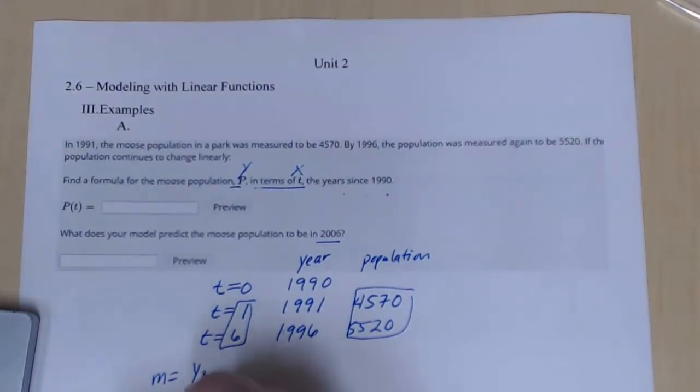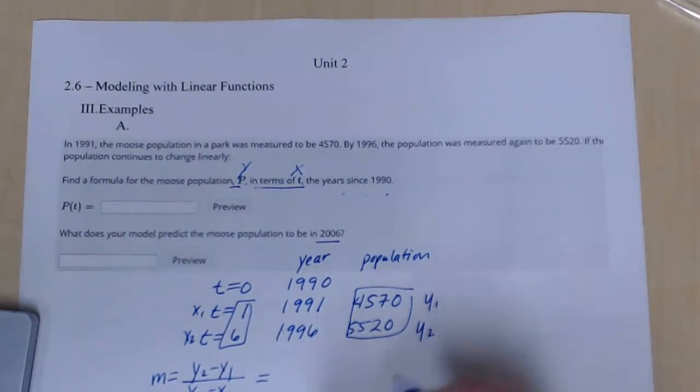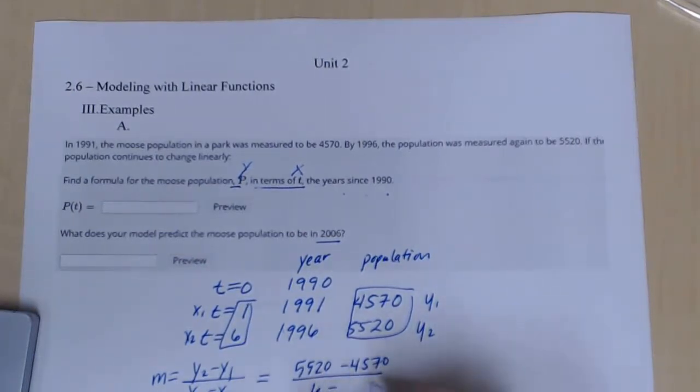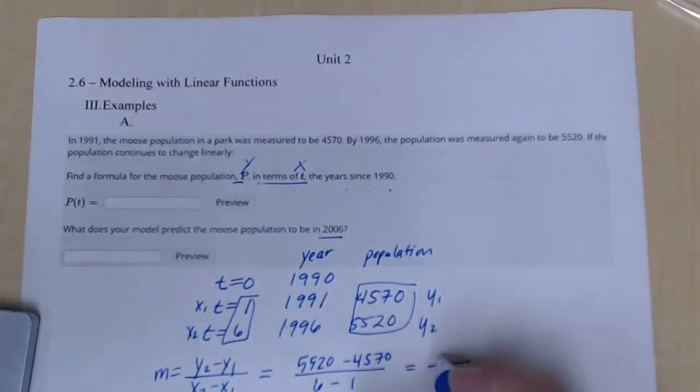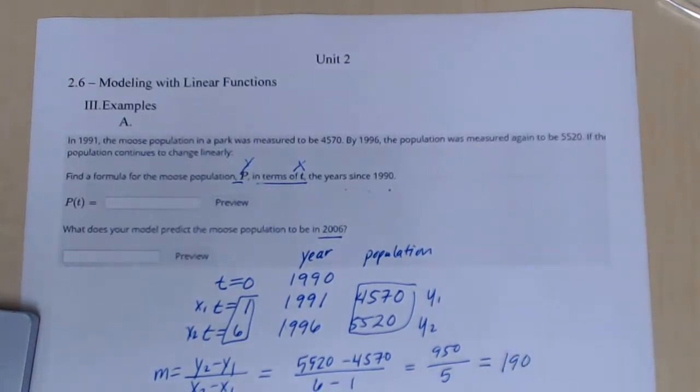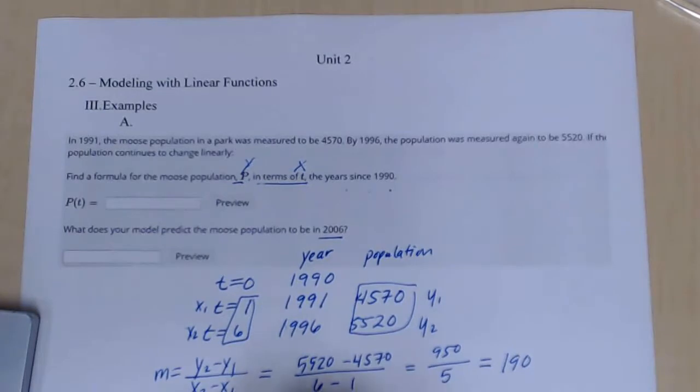So I'm going to say slope equals y2 minus y1 over x2 minus x1. So this is going to be my x1, x2, y1, y2 set up 5520 minus 4570. Use your calculator to help you with this arithmetic. 6 minus 1 gives me 950 over 5, which gives me 190. So therefore, my slope is 190. That's how much the population is increasing each year.